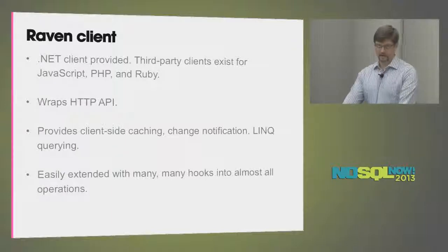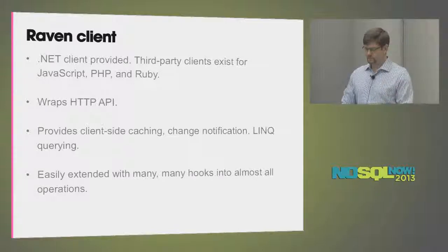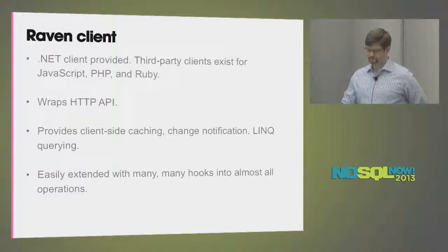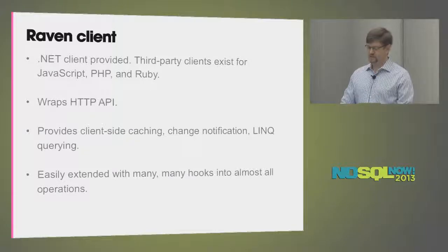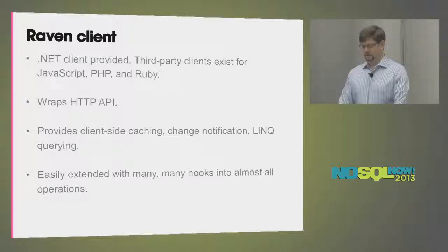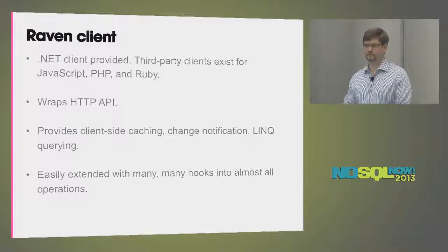On the client side, Raven ships with the .NET client. Raven's written in .NET, the server as well. But there are clients for JavaScript, PHP, and Ruby out there, although they're not official. It's pretty well supported by the community, and I think there are others underway for Java. It's really just a wrapper around the HTTP API. It provides a lot of additional features: caching, change notifications. As a client, you can say I want to know any time this document changes, or any time a set of documents changes. You'll get a notification on the client side through a technology called SignalR — basically a WebSockets kind of thing built in .NET — which works really well.